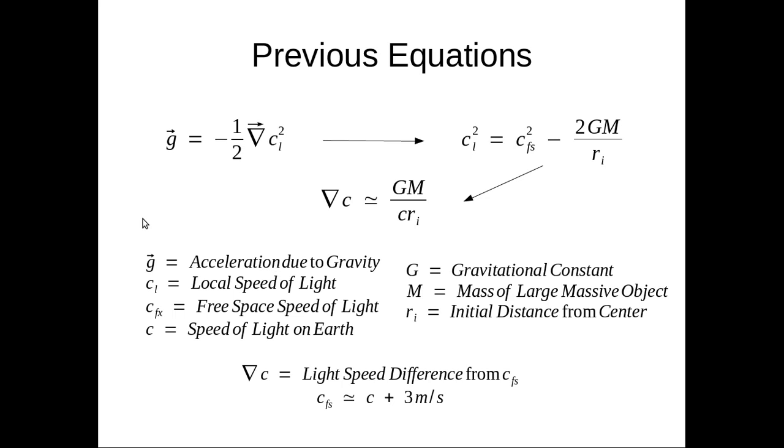Previous equations from previous lectures, we have acceleration due to gravity is governed by this equation, which is the local speed of light and is varying. Because we know what the equation for gravity is, we were able to derive this equation, where this is the free space speed of light.